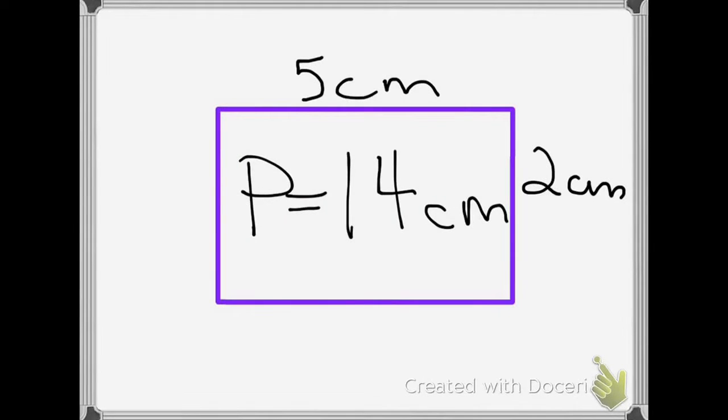We know how to find the perimeter of a shape. We add up all the sides, and that is the perimeter. It's the distance around. Today, we are going to make a shape based on the perimeter already given to us.